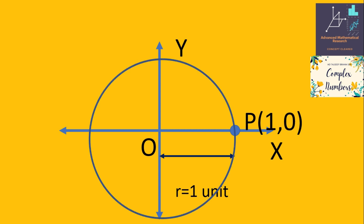Now let's draw a circle. A circle is obtained when the point P moves 360 degrees. Let's consider one of the points on the circle and call it Q. Since point Q is moving on the circle, its distance from the origin is constant. We can write the coordinates of point Q as (1, 0) because r is constant — the radius of the circle remains constant as point P moves to Q.